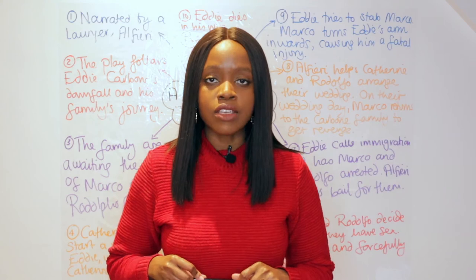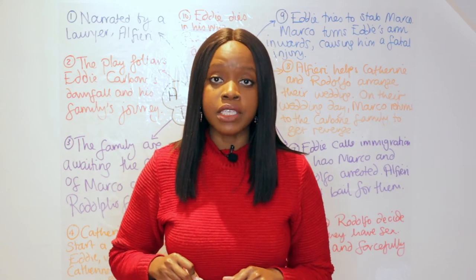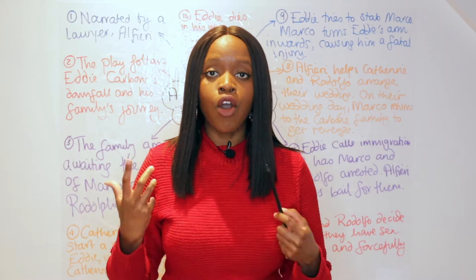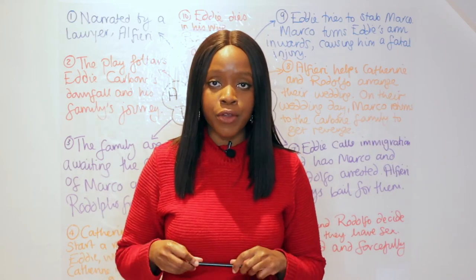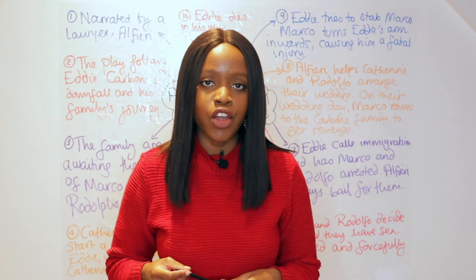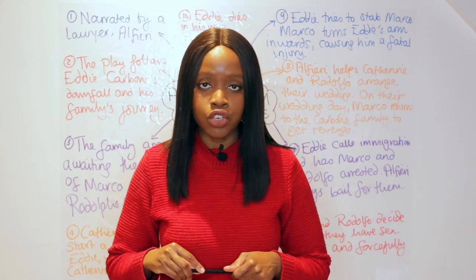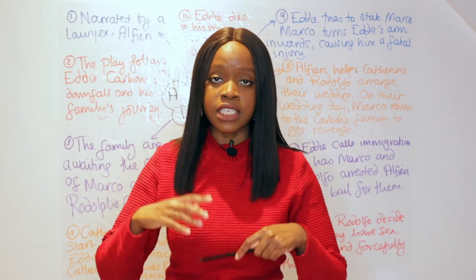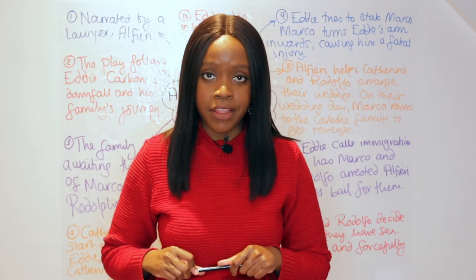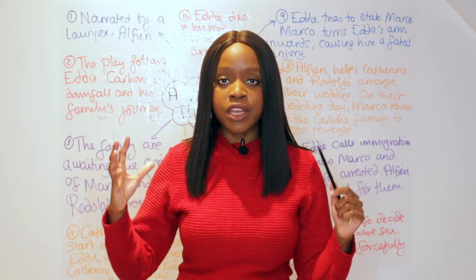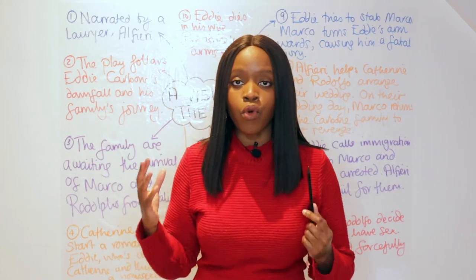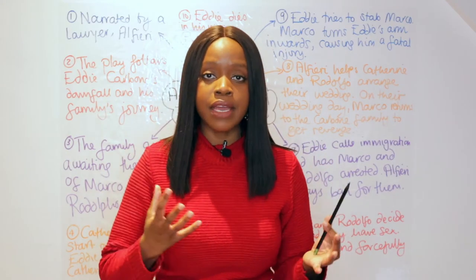A View from the Bridge is arguably Arthur Miller's most famous play and essentially charts the tragic downfall of its central protagonist, Eddie Carbone, who develops a jealousy over his niece's love interest. This leads him to make a series of mistakes that ultimately results in his death. What I thought would be really good is to essentially create a mind map of all the key events to remember in this play.